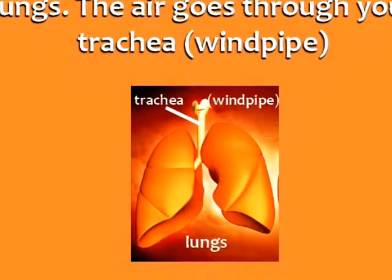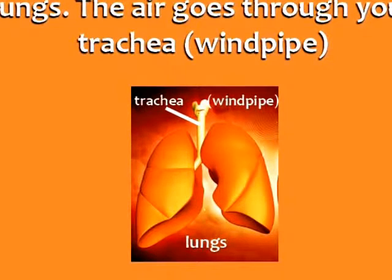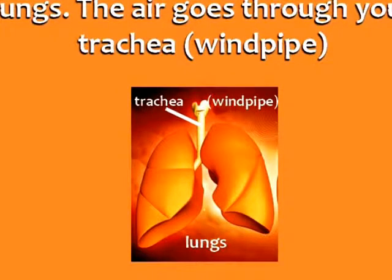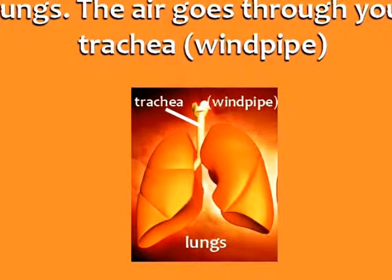The blood is oxygenated in your lungs. When you breathe, the air goes through your trachea, which is more commonly called your windpipe.